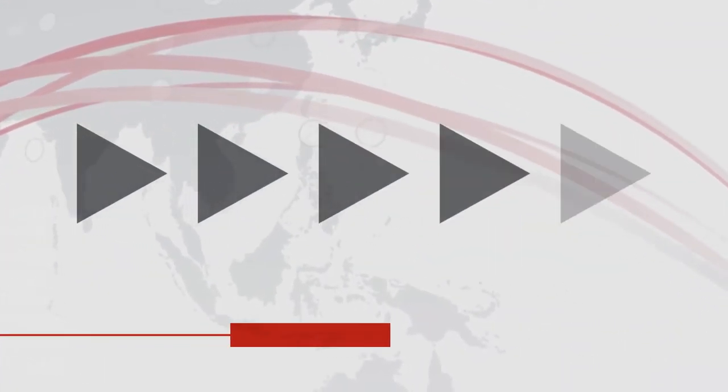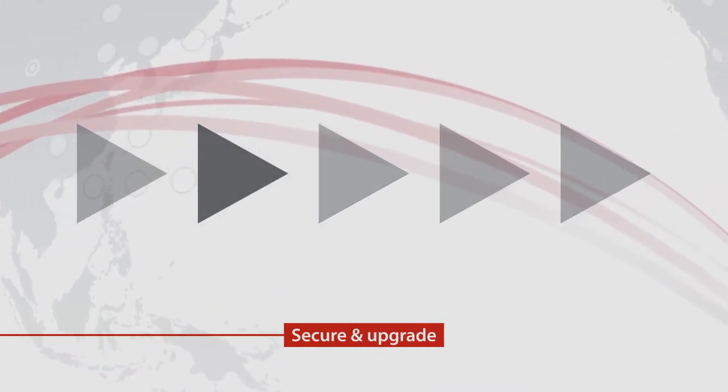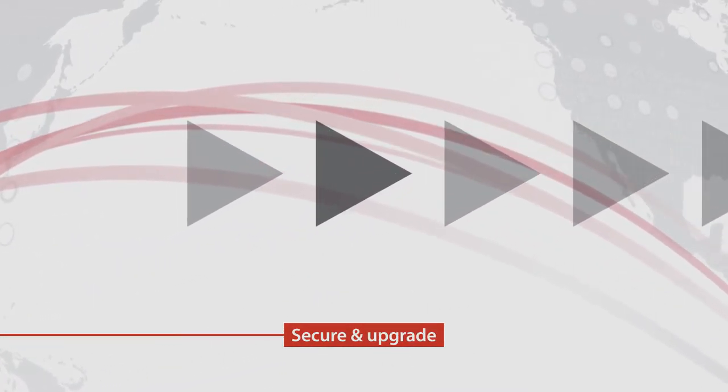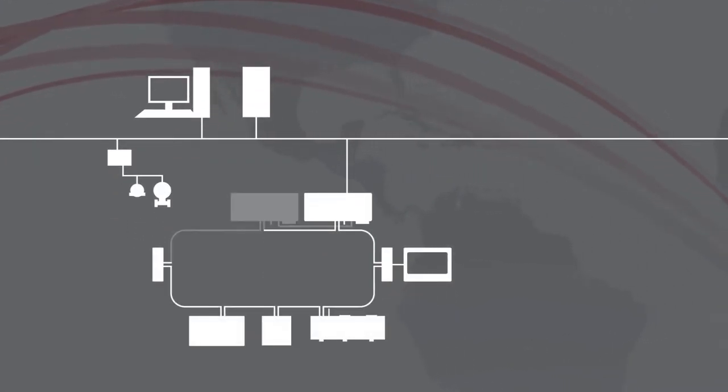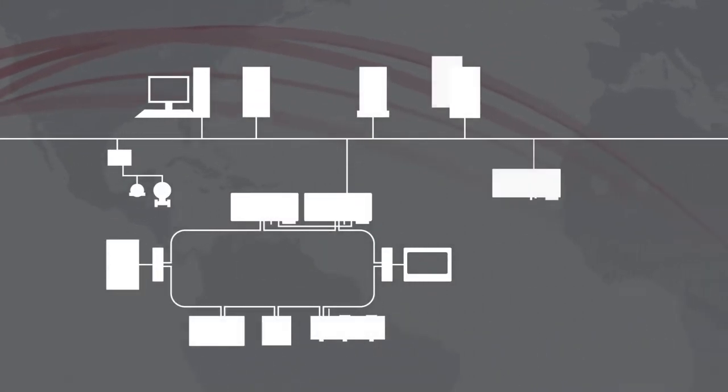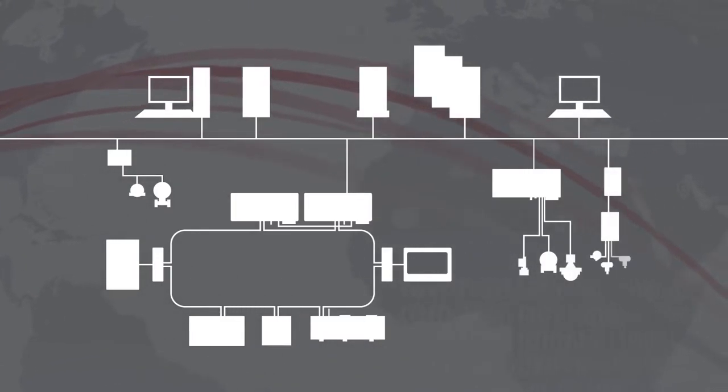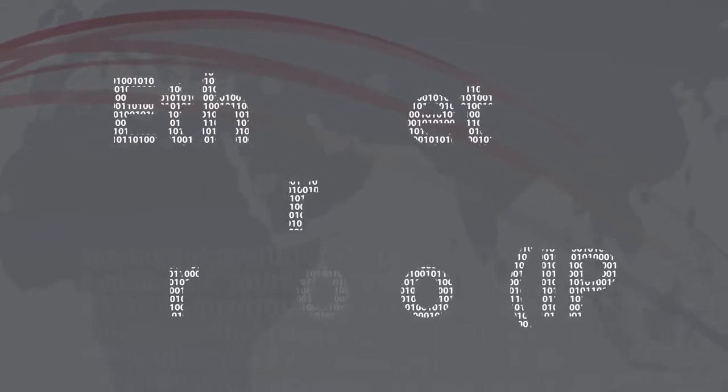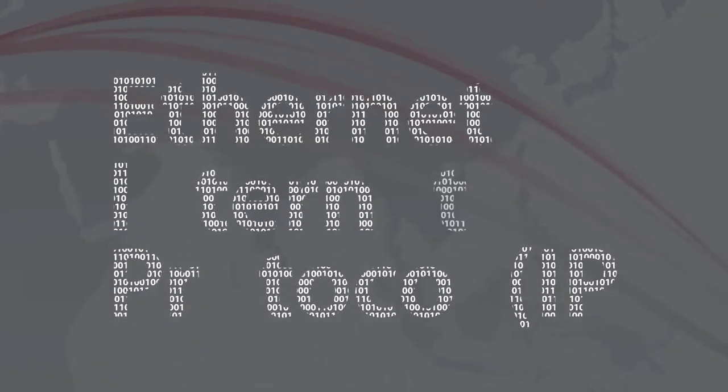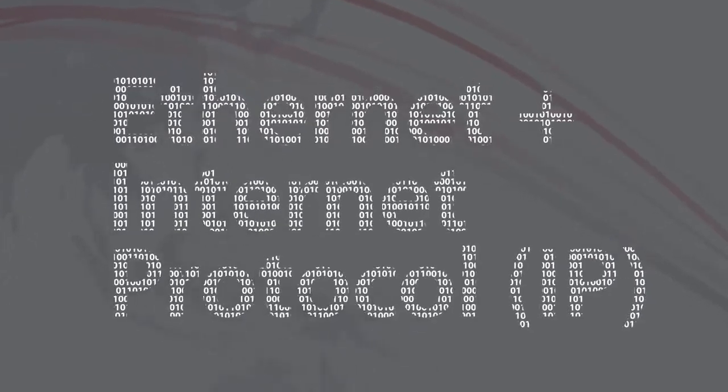Stage 2 is Secure and Upgrade. A connected enterprise isn't truly connected without a common network infrastructure that facilitates communications between your automation and control systems and your enterprise network. Ethernet IP helps enable this network technology convergence through the use of standard Ethernet and Internet Protocol.